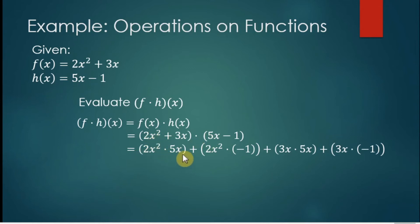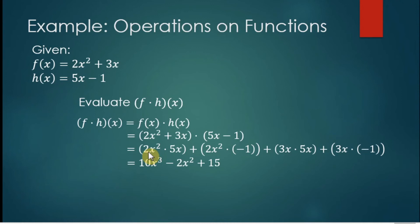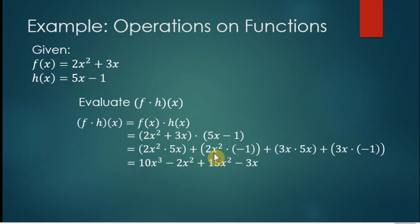To multiply, we apply the FOIL method. The first terms are 2x squared and 5x. The outer terms are 2x squared and negative 1. Then we have 3x and 5x, and last we have 3x and negative 1. Multiplying: 2x squared times 5x gives 10x cubed — we add exponents, so x squared times x is x cubed — and negative 1 times 2x squared gives negative 2x squared.